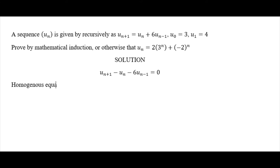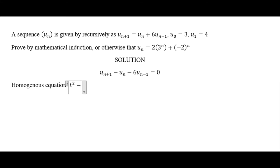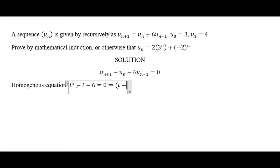The auxiliary equation is written by choosing parameter t: t squared for n+1, minus t for n, minus 6 equals 0. We factor this quadratic equation into (t - 3)(t + 2) = 0.